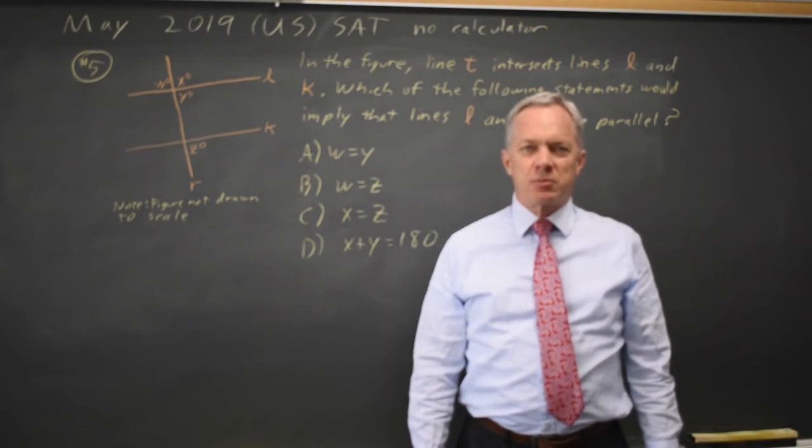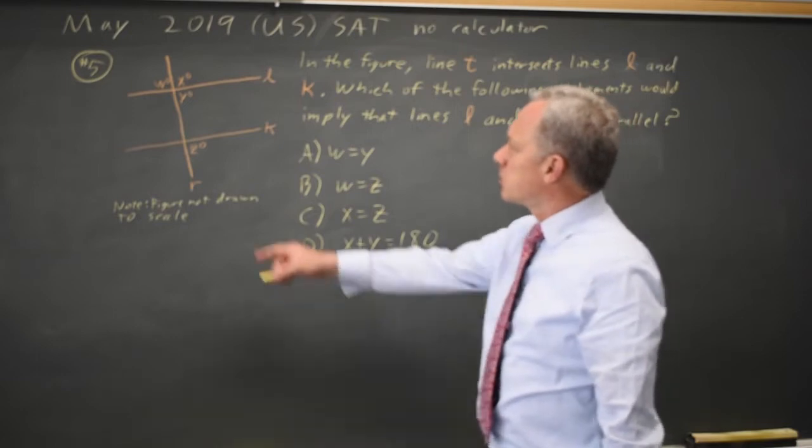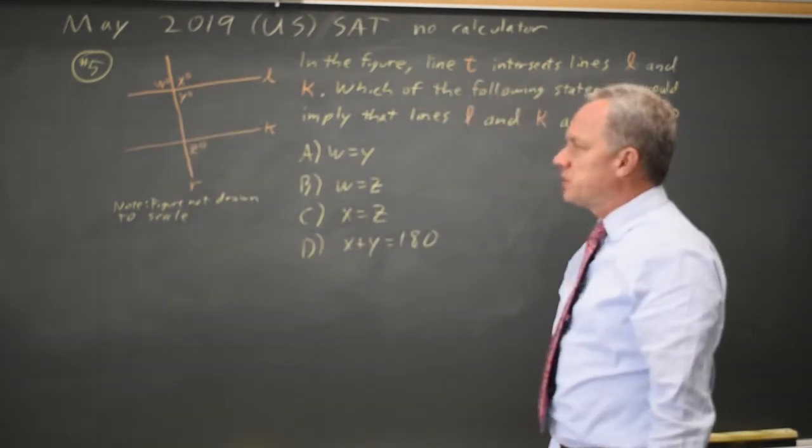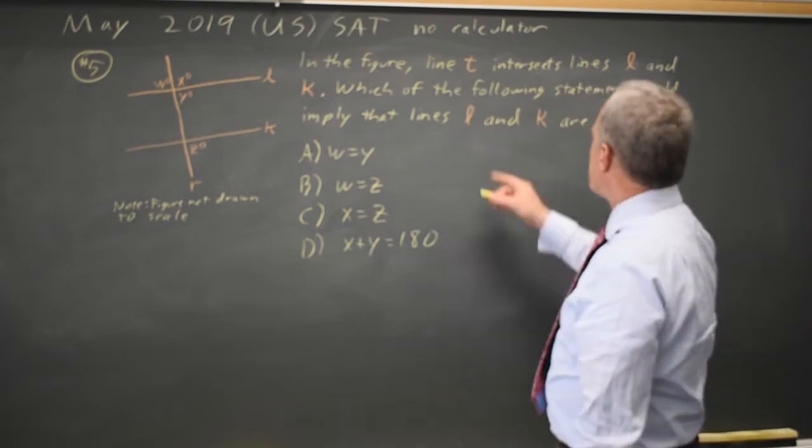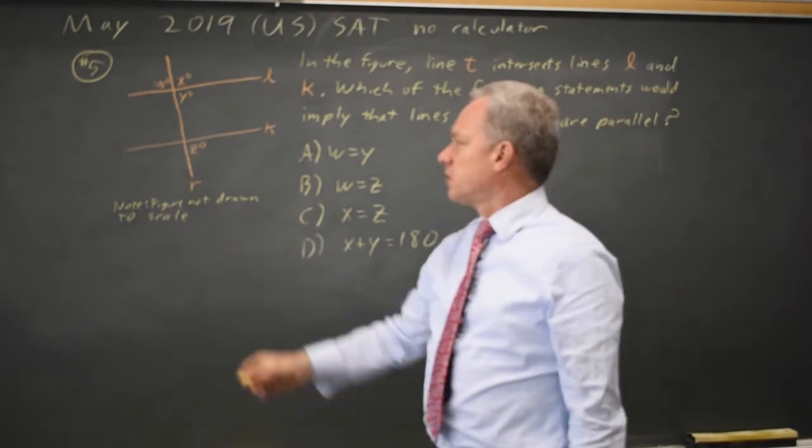This is no calculator question number five from the May 2019 US SAT. College Board gives us a diagram with intersecting lines and they ask which statement would imply that L and K are parallel, where this diagram is not necessarily to scale.